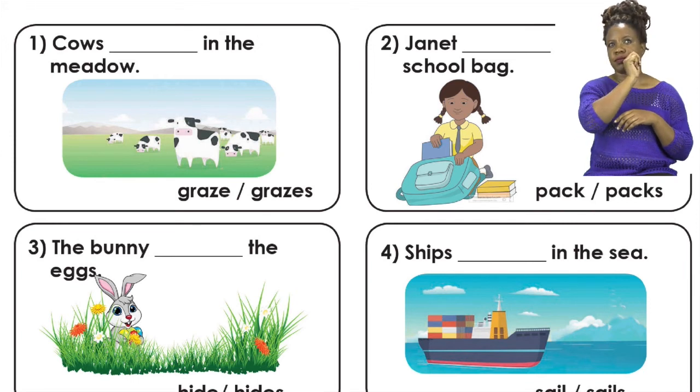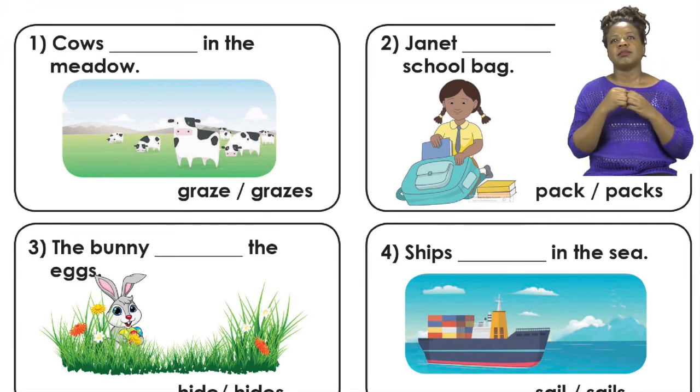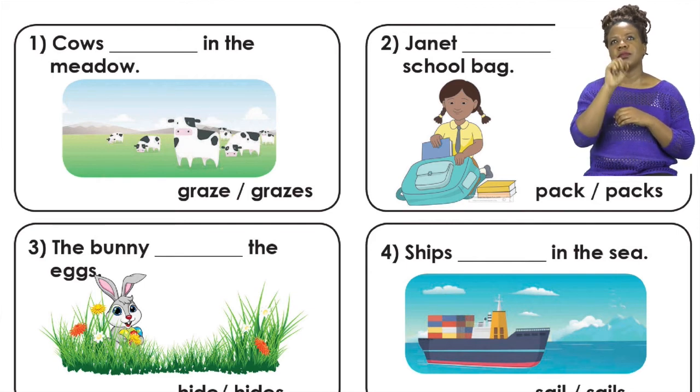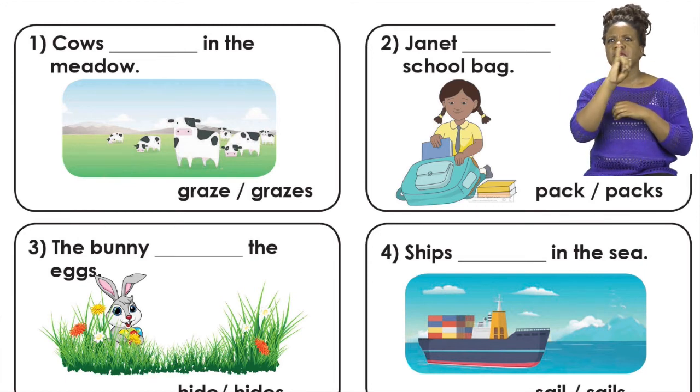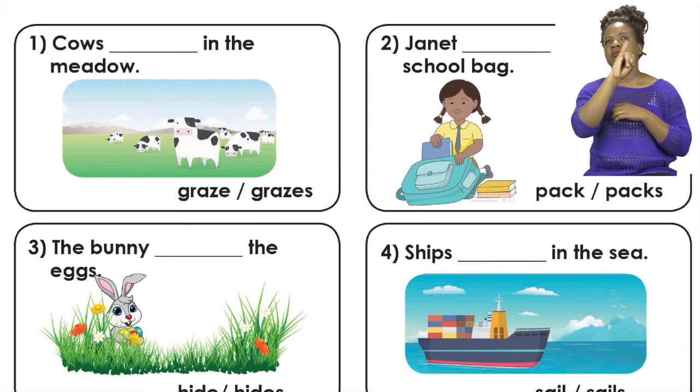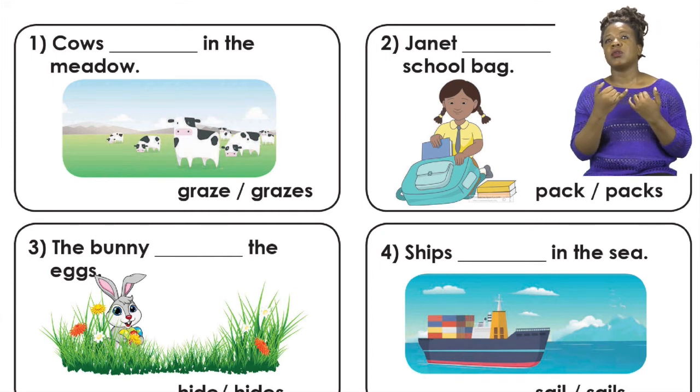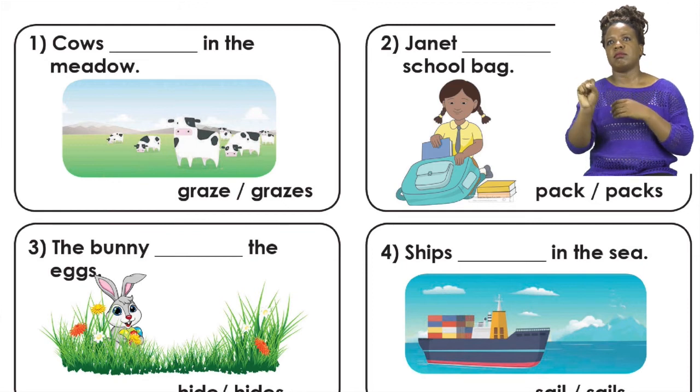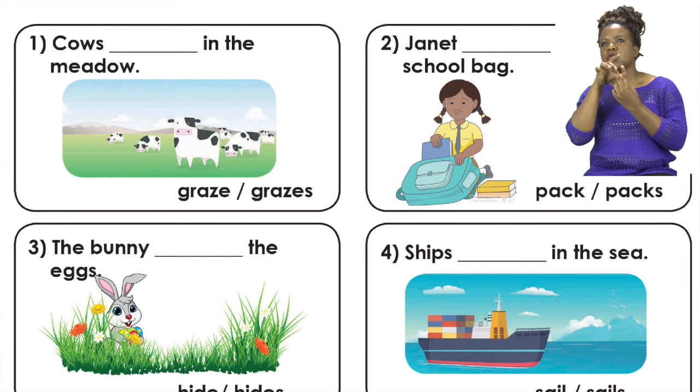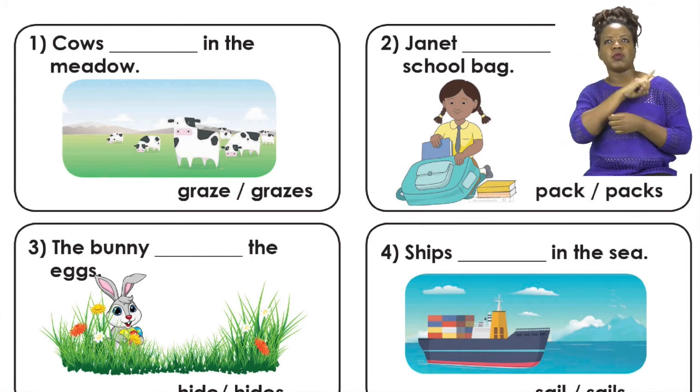Let's now take a look at number two. Number two, we have the sentence, Janet dash her school bag. Now we can see Janet and it looks like she's only one. And Janet is a singular noun. So we know that because our subject is a singular noun, that means our verb needs to have an S at the end. So we're going to be choosing between the word pack and packs. In this case, the correct answer is packs. Now we are able to say our sentence. Janet packs her school bag.